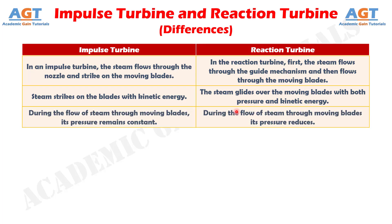Number 3: In impulse turbine, the pressure of steam remains constant during its flow through the moving blades. But in reaction turbine, the pressure of steam reduces during its flow through the moving blades.